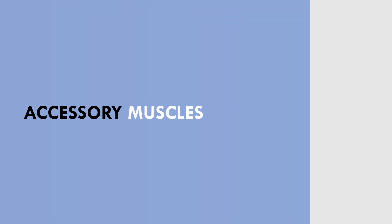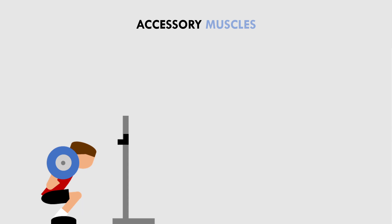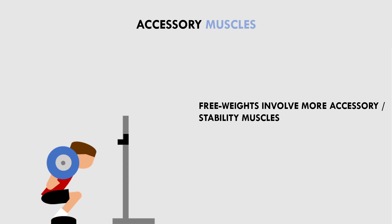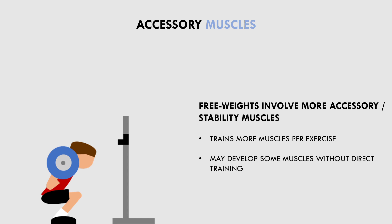The second benefit that free weights have is their involvement of accessory muscles, which could be seen as a positive or a negative depending on the context. Free weights generally involve more accessory and stabiliser muscles, because the trainee must find stability in all planes of motion. Machines have a set movement pattern, so there are minimal stability requirements. Free weight squat, deadlift, and row variations involve high trunk stability demands, meaning the abs and spinal erectors are getting a decent stimulus. Trainees may be developing these muscles without having to directly train them, making training overall more time efficient.